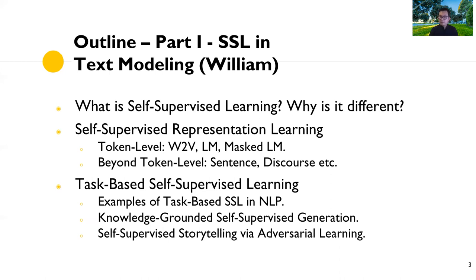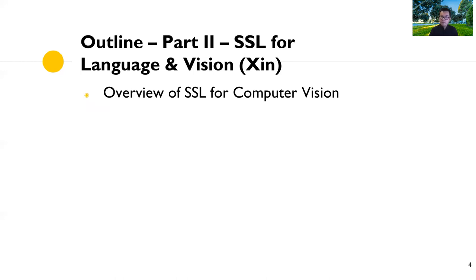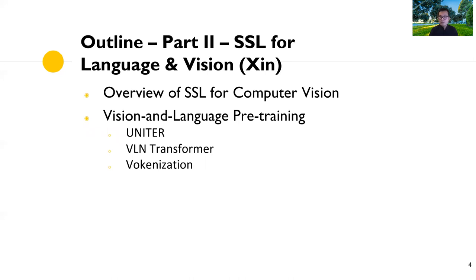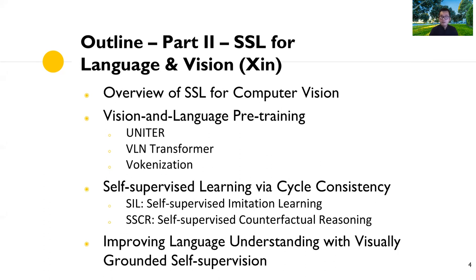For the second part, Xin will talk about a variety of items on language and vision. He'll start with earlier work from 2014–2015 in computer vision and how people used self-supervised learning there. Then he'll cover recent work on vision-language pre-training, including UNITER, VLN transformer, and vulcanization. He'll also talk about self-supervised learning via cycle consistency with focus on self-supervised imitation learning, vision-language navigation, self-supervised counterfactual reasoning for image and language-based editing, and improving language understanding with visually grounded self-supervision.